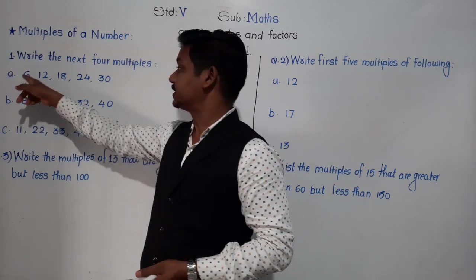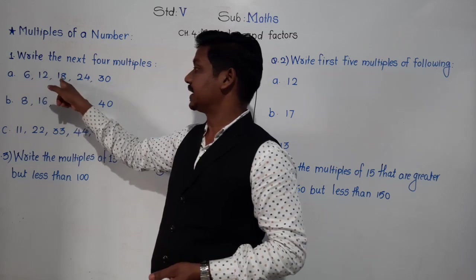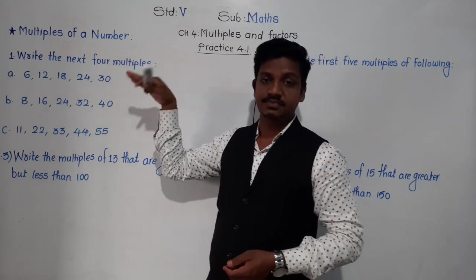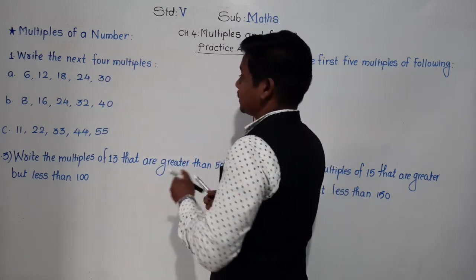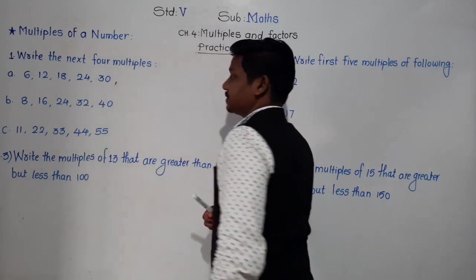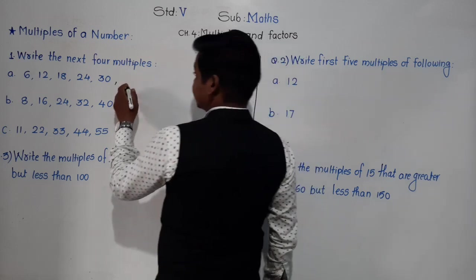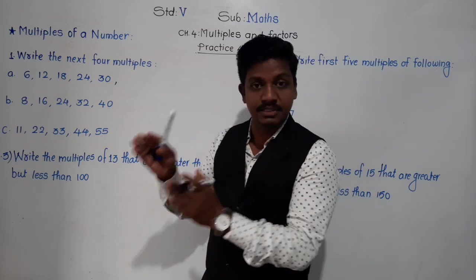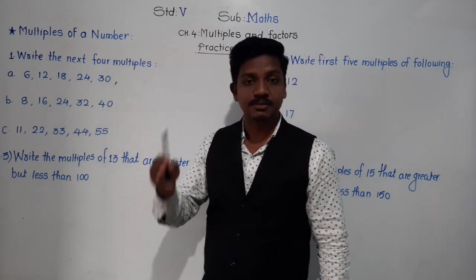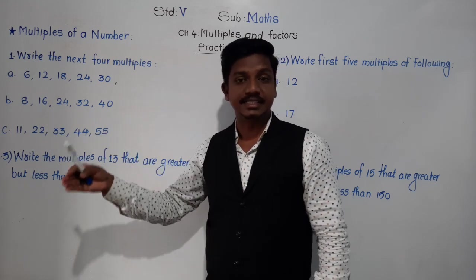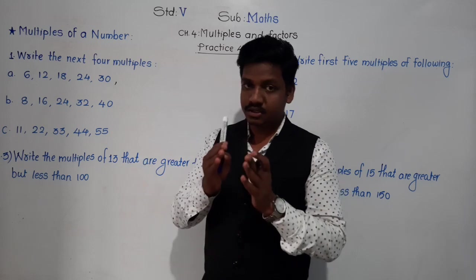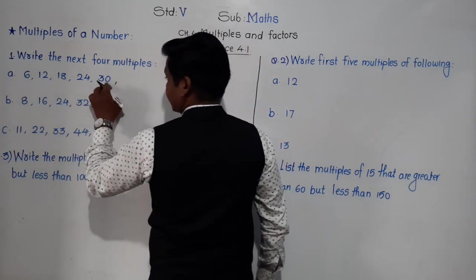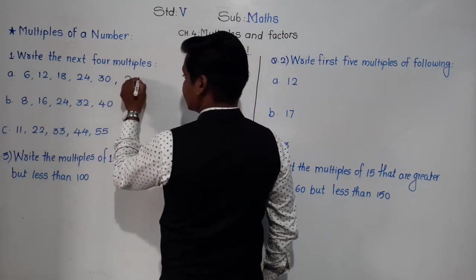These are the multiples of 6: 6×1=6, 6×2=12, 6×3=18, 6×4=24, 6×5=30. We need to find the next 4 multiples in sequence. The series is up to 6×5=30, so next comes 6×6=36, 6×7=42, 6×8=48, and 6×9=54.